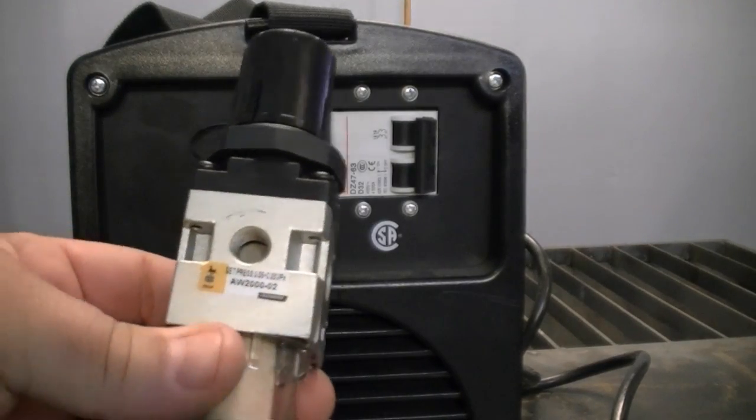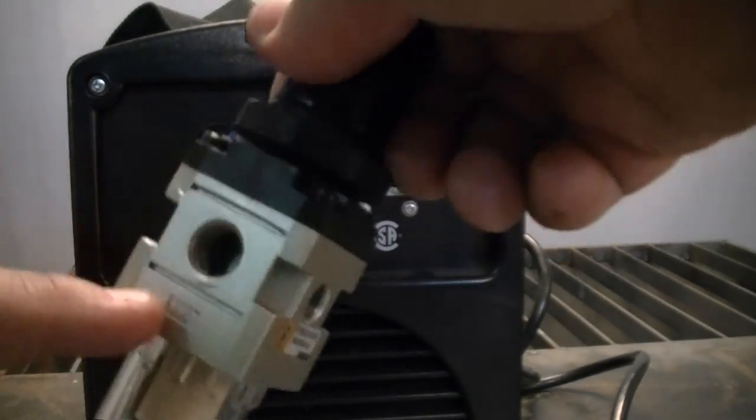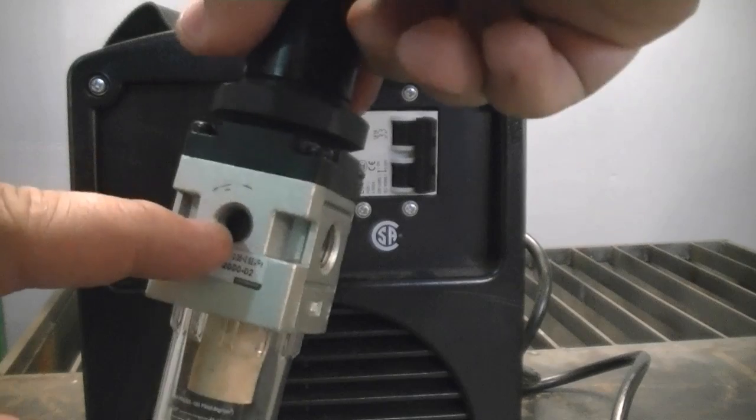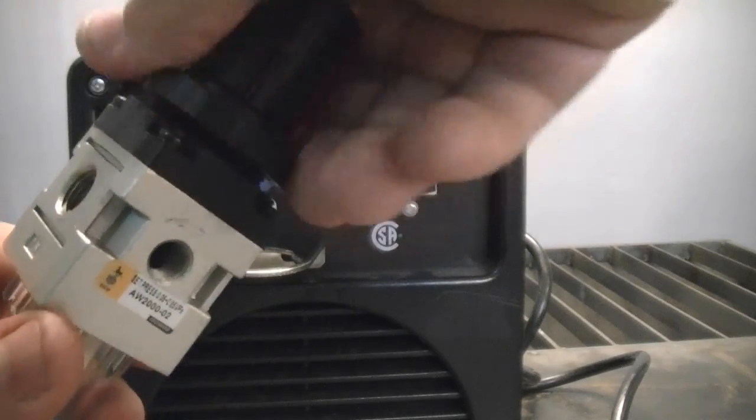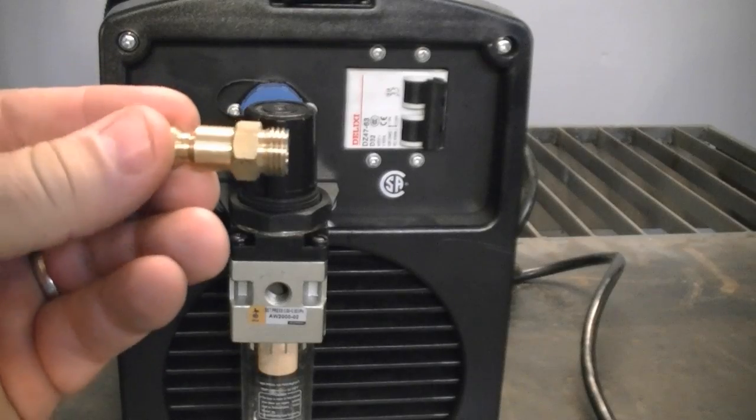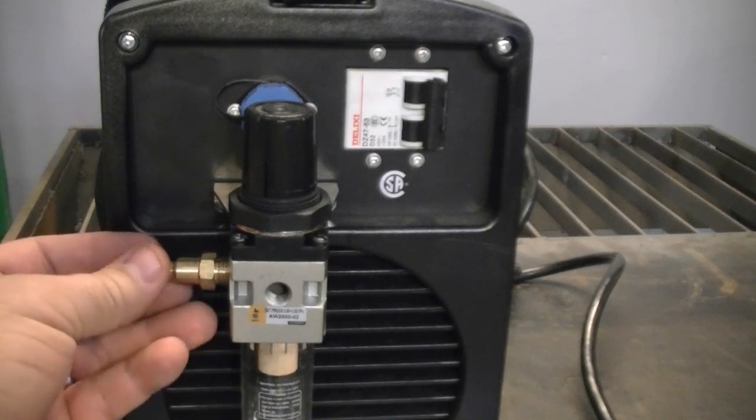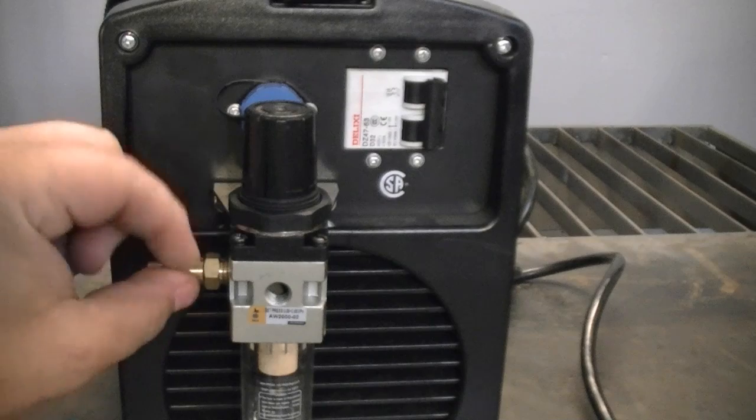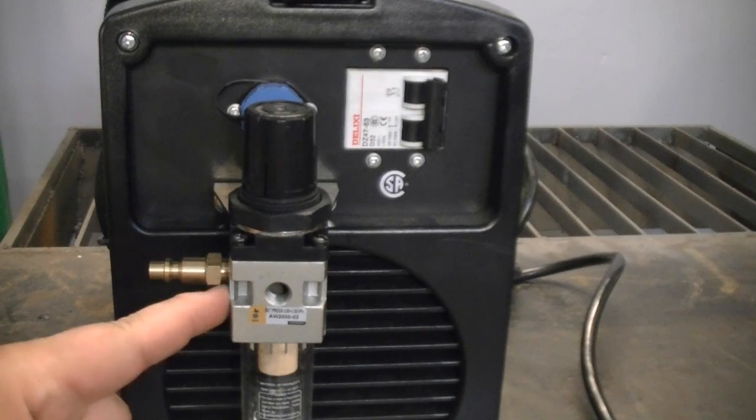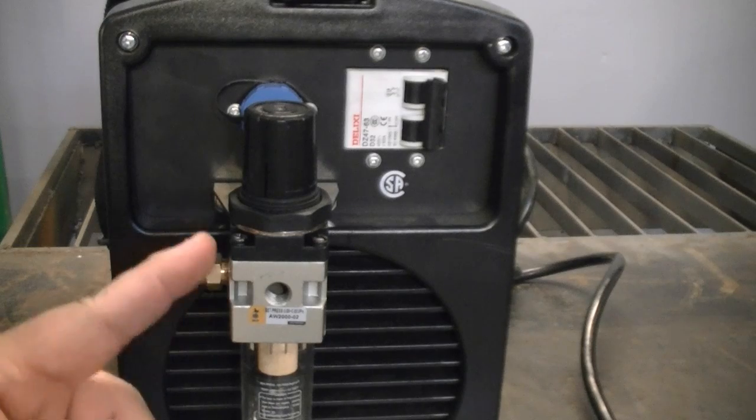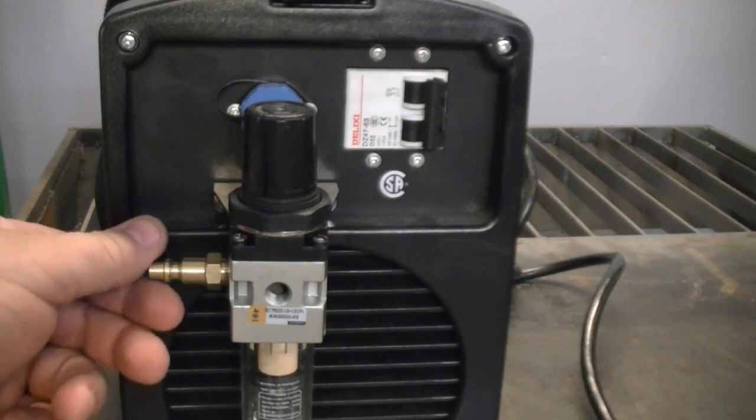Next, locate your air regulator. One side will say in, and the opposite side will say out, and you'll have a hole in the middle. Next, locate your quarter inch automotive quick connect nipple. Install it on the left side where it says in. Now you may need to use Teflon tape or some sort of thread sealant. Do not use too much and clog up the fitting.